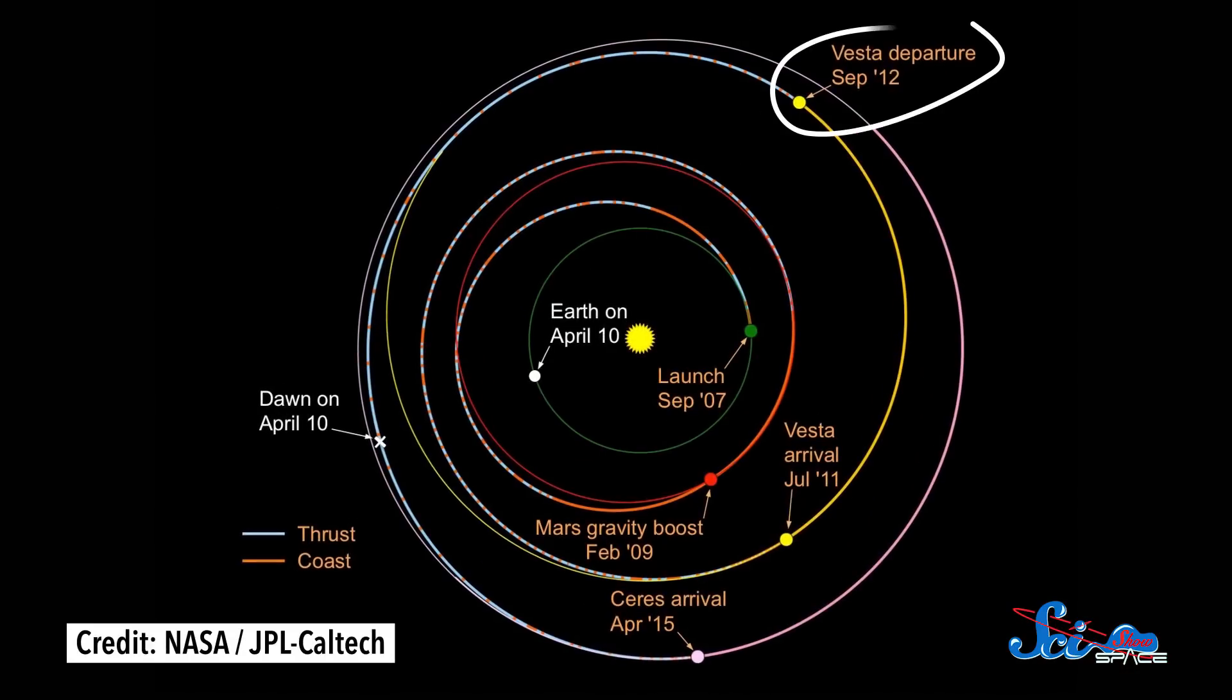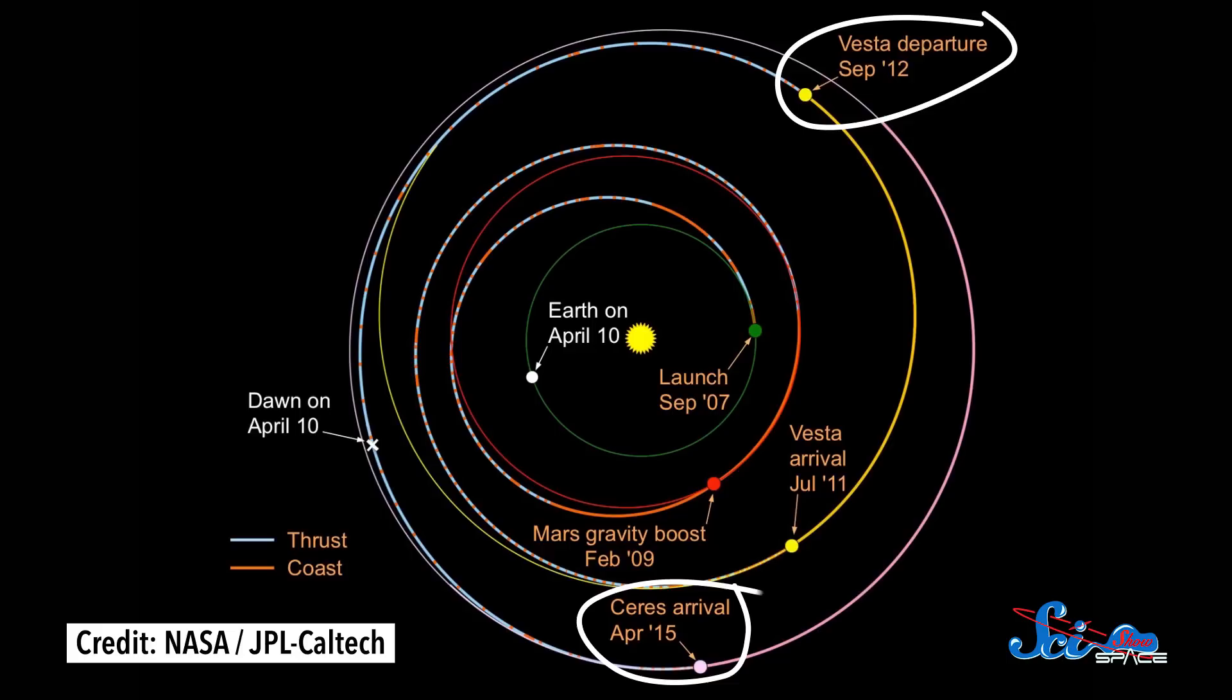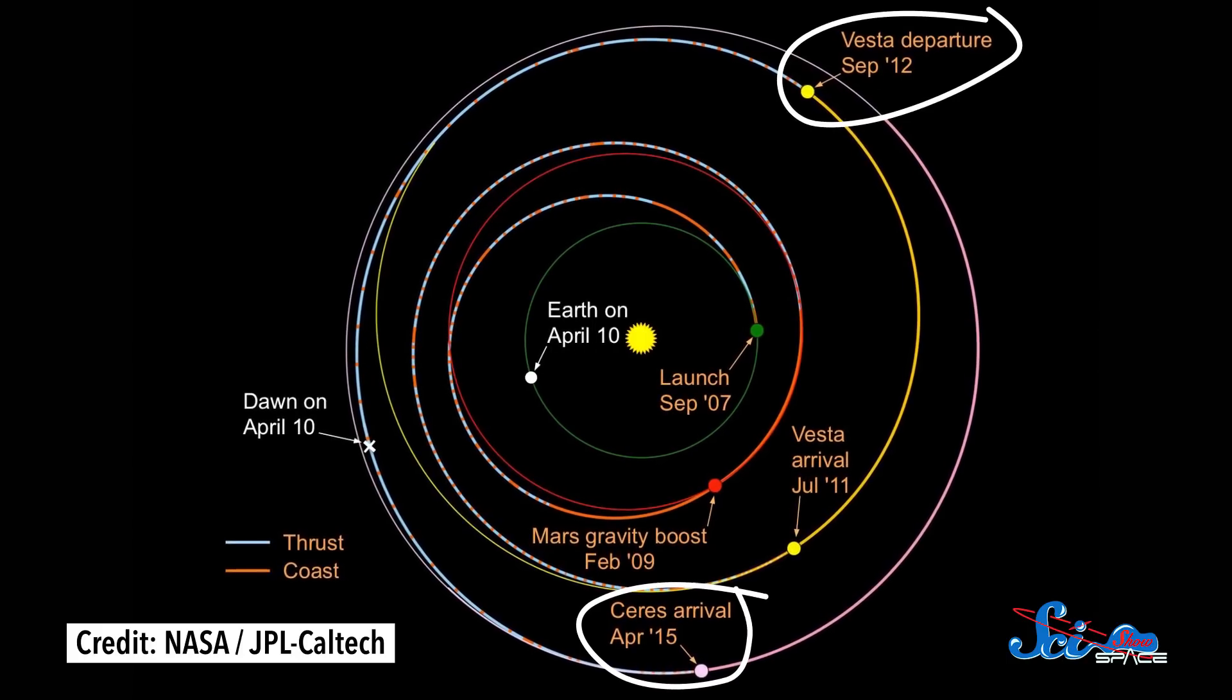After 14 months at Vesta, Dawn packed up its bags and started a 1.5 billion kilometer almost three-year journey to the dwarf planet Ceres, where it arrived in 2015, and it's been there ever since.